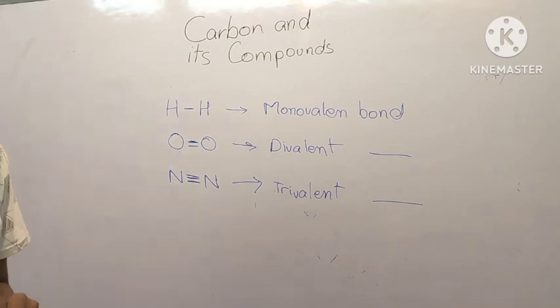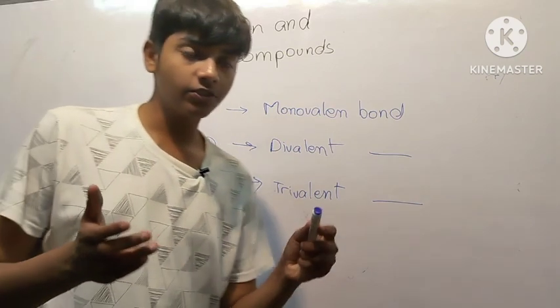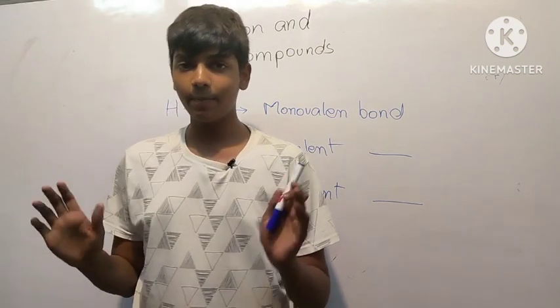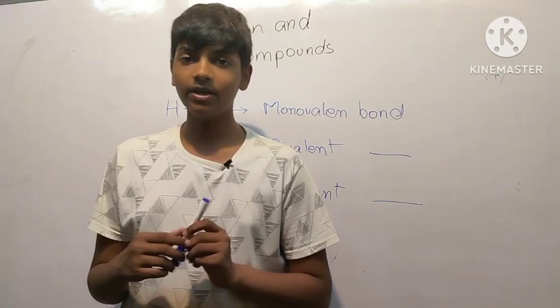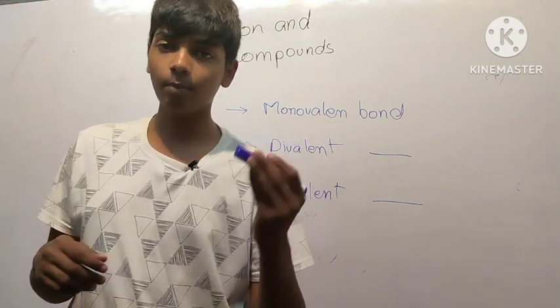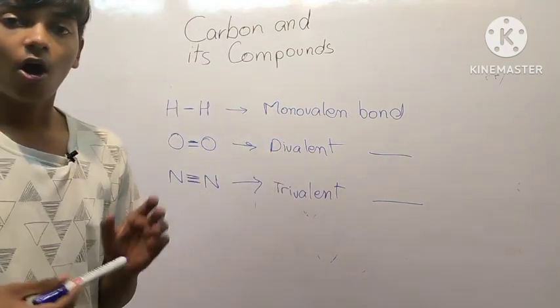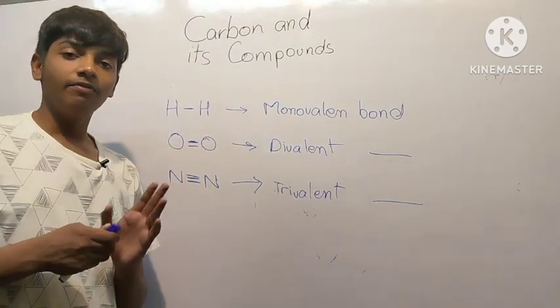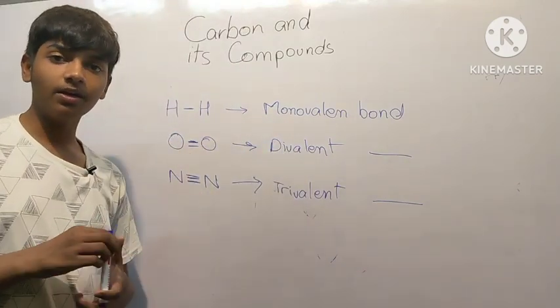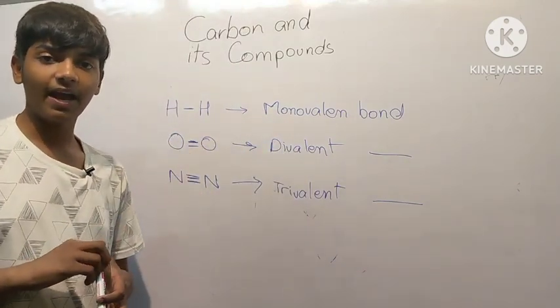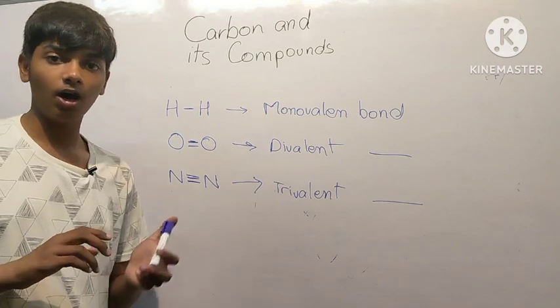That covers the basics of this chapter. Next we will be discussing allotropes of carbon, which are diamond, graphite, and fullerene.